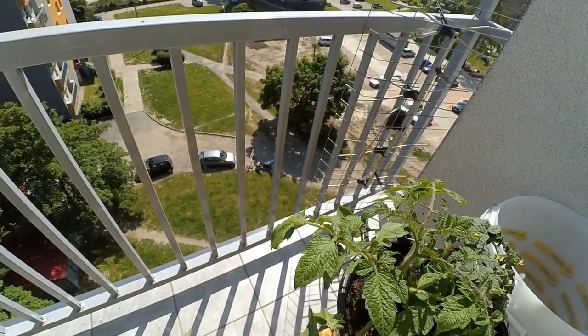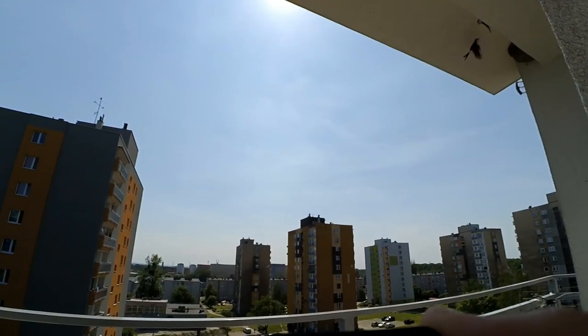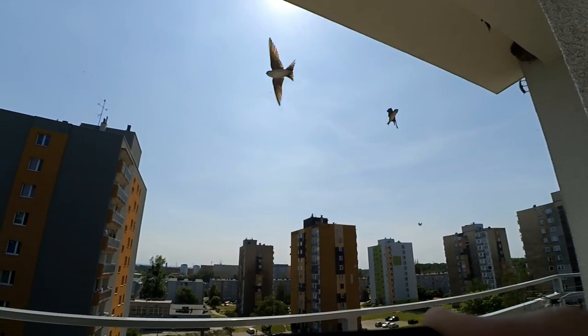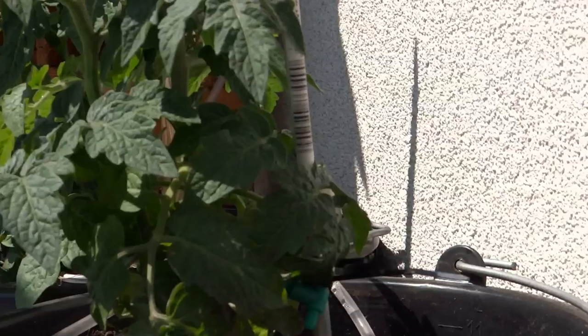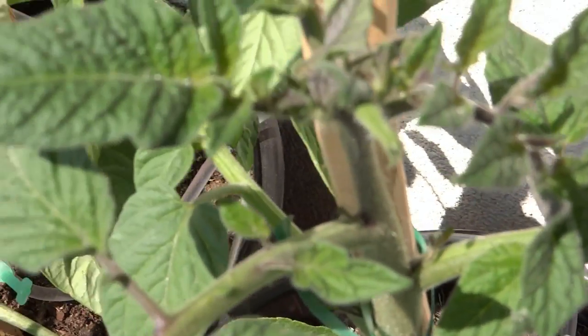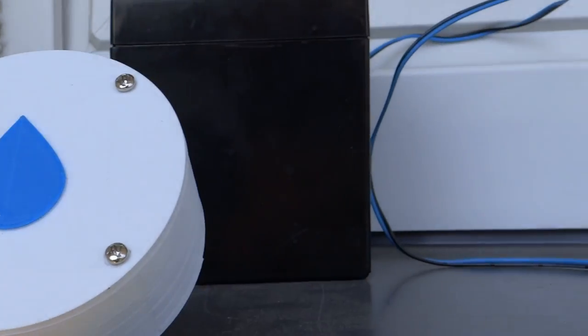Since I have tomatoes on my balcony, I wanted to have a human-free watering system for them so that they can live on their own. Because I can make stuff with Arduino, I decided to make one. Some time ago I made a Flotcher,